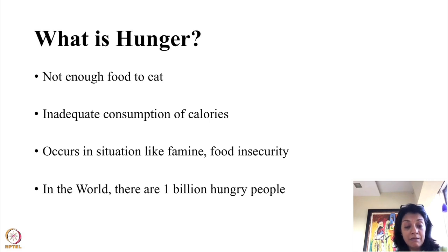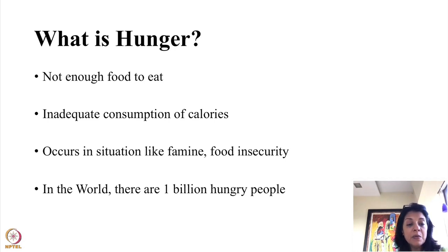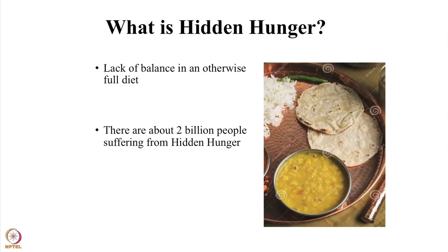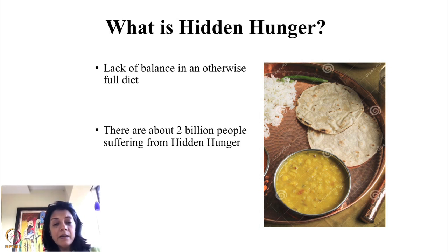When a child is hungry, obviously they're not getting enough calories, but the main thing is the child is also not getting many nutrients. Absence of calorie — that's what is called hunger — and it occurs mainly in situations like famine, food insecurity. Generally in the world there are about 1 billion hungry people, in poverty, war-stricken areas, food-insecure areas, or during famines or emergencies.